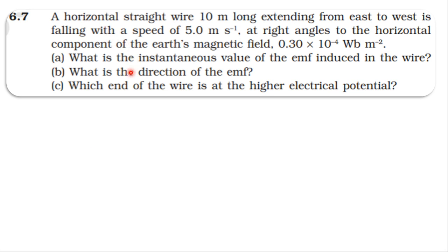From NCERT textbook, from the topic electromagnetic induction, problem 6.7. A horizontal straight wire 10 meters long extending from east to west is falling with a speed of 5 meters per second at right angles to the horizontal component of earth's magnetic field, 0.3 × 10^-4 Weber per meter square.